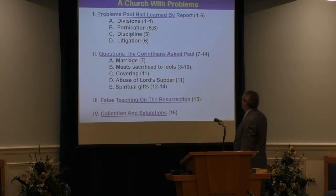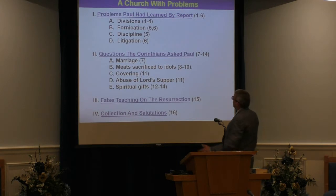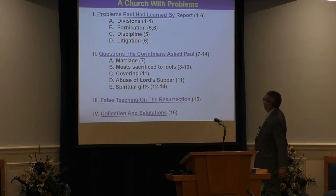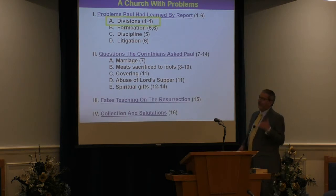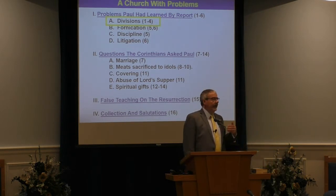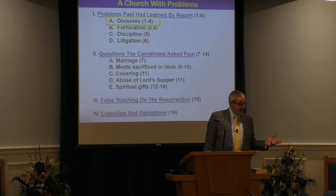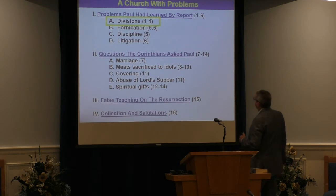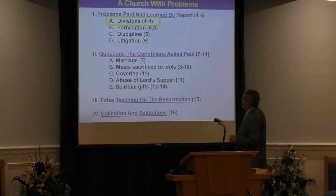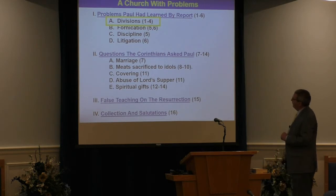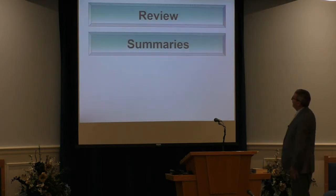Here is our outline of the book. We're finishing that first subsection. Chapters 1 to 6 deal with things that were learned by report, and we're finishing this section on division. Next week we get into fornication — a problem of fornication in chapter 5, addressed also in chapter 6. There's also a problem of discipline in chapter 5. But we're finishing chapters 1 to 4 concerning division.